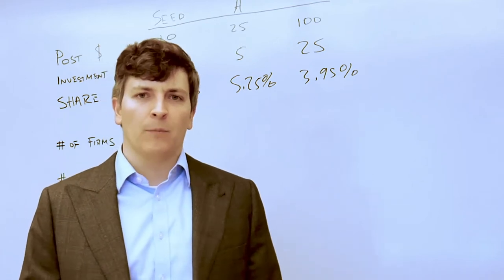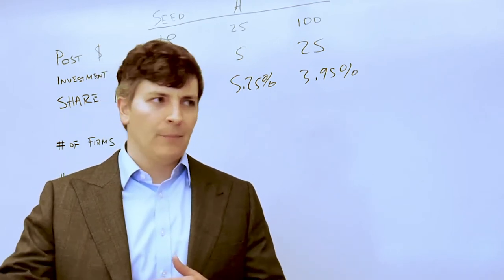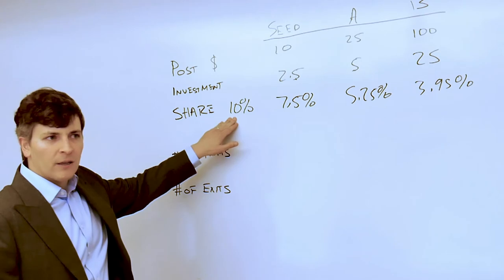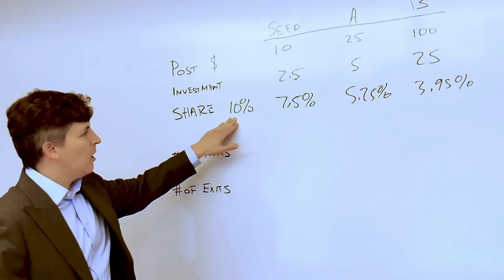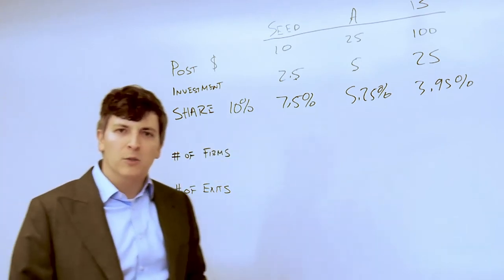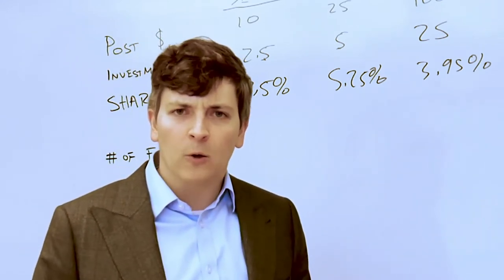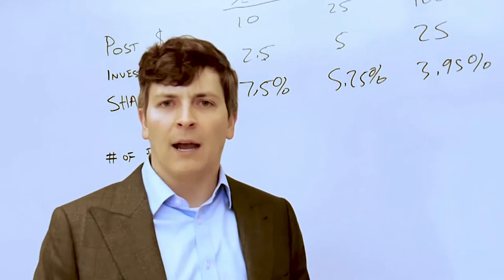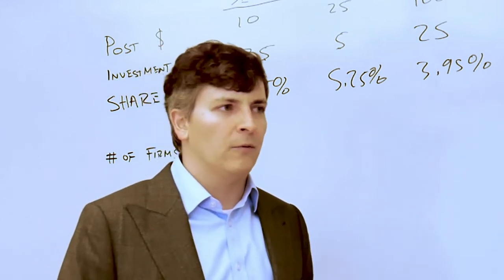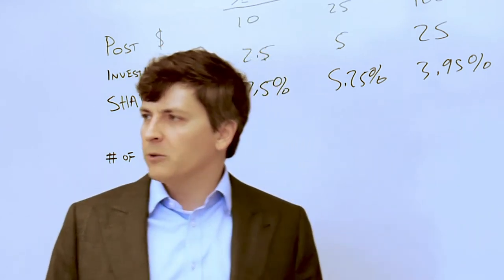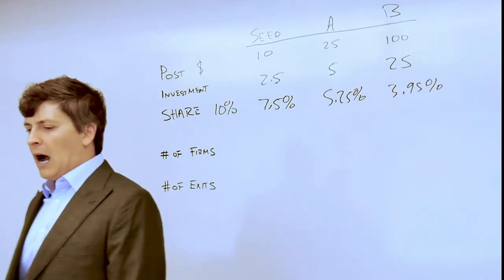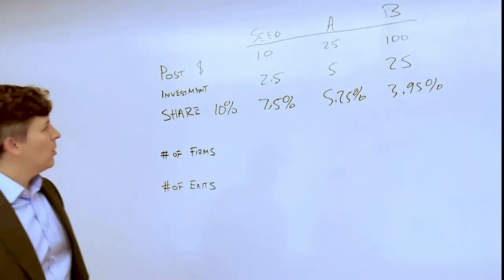So what is that 10% of the firm going to look like over time? Your share starts out at 10% of the firm. Now the founder believes that the firm is going to be worth quite a lot of money over time, but that value is not going to be realized until outside investors put money into the firm. As a result of putting that outside money into the firm, your share is going to be diluted.